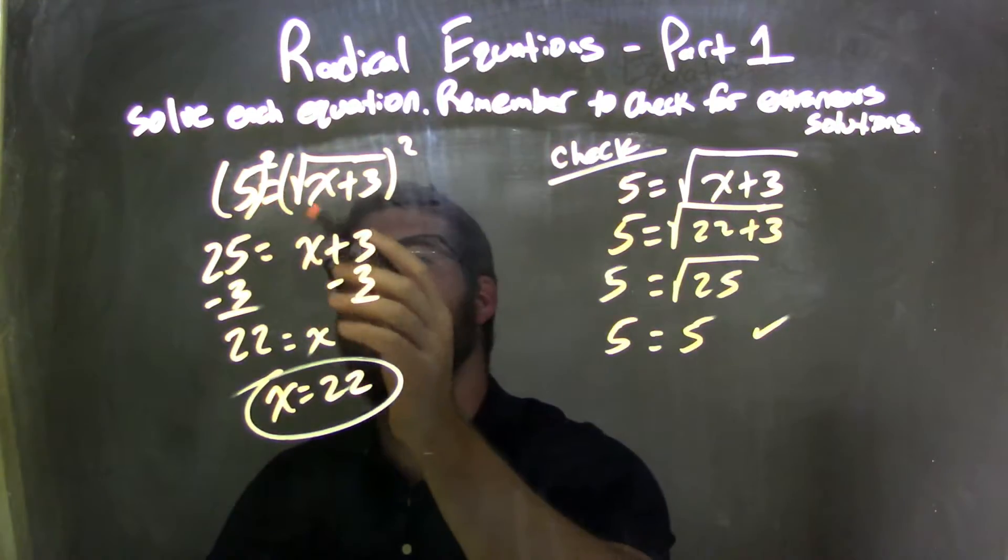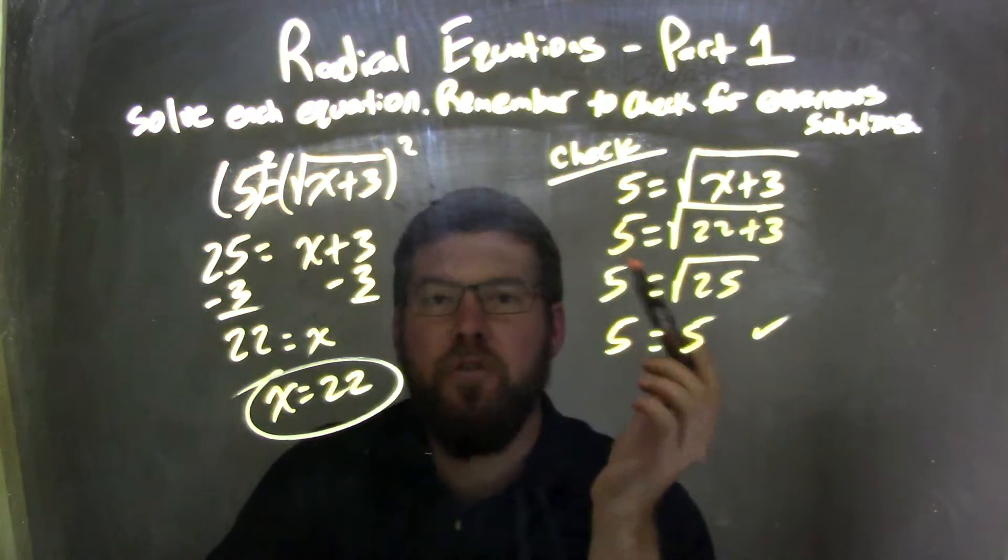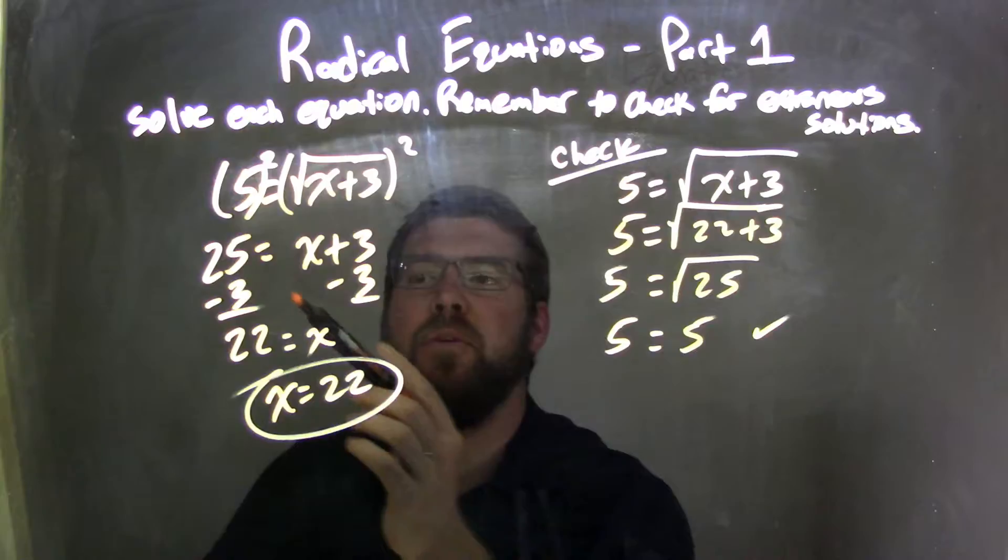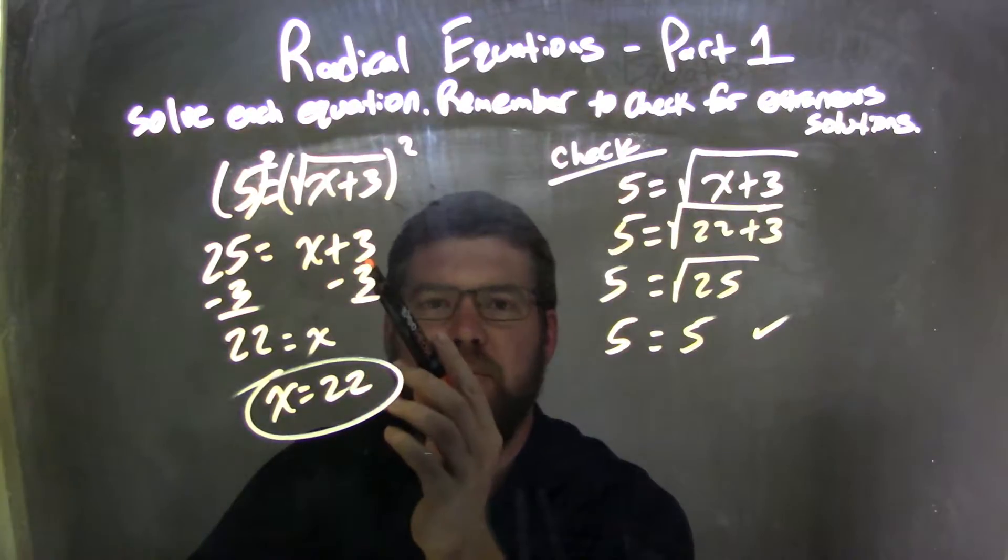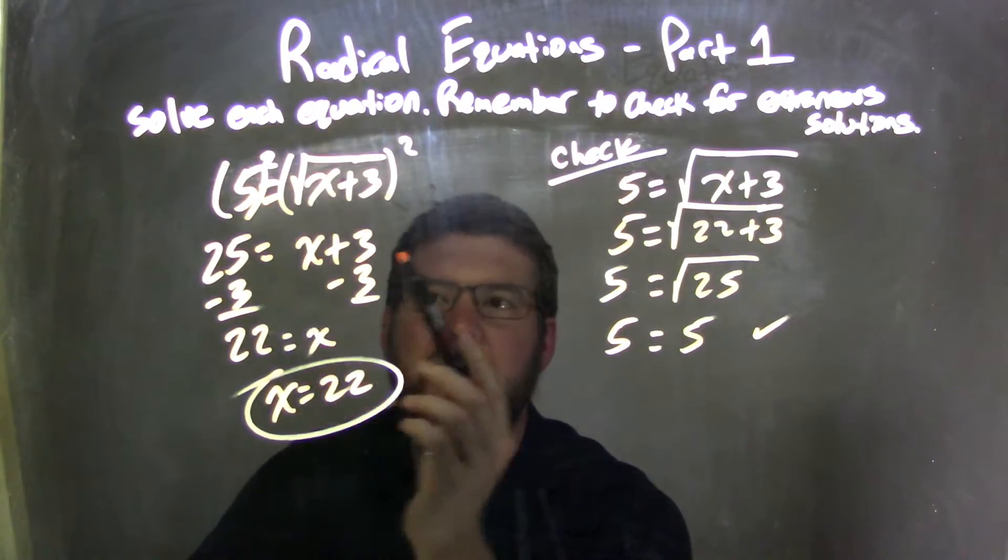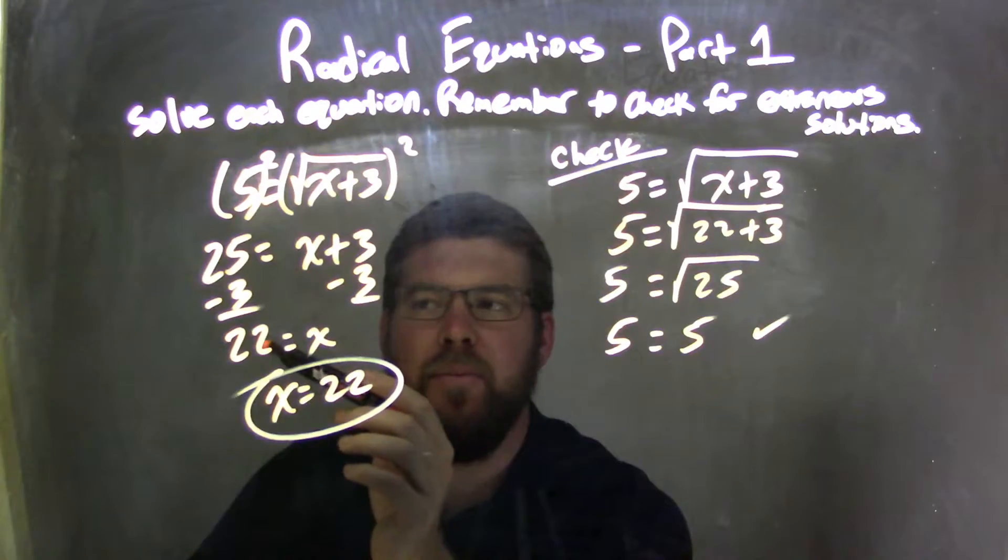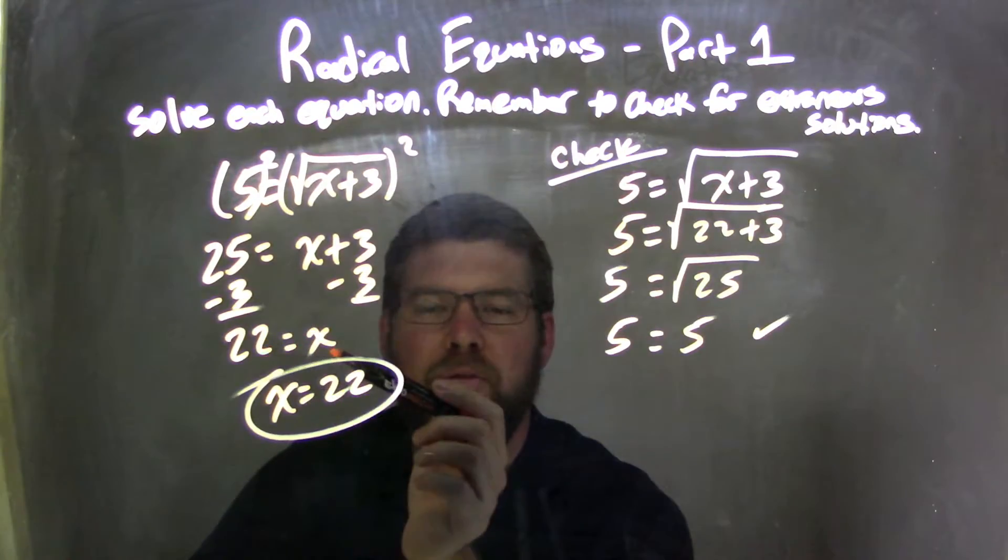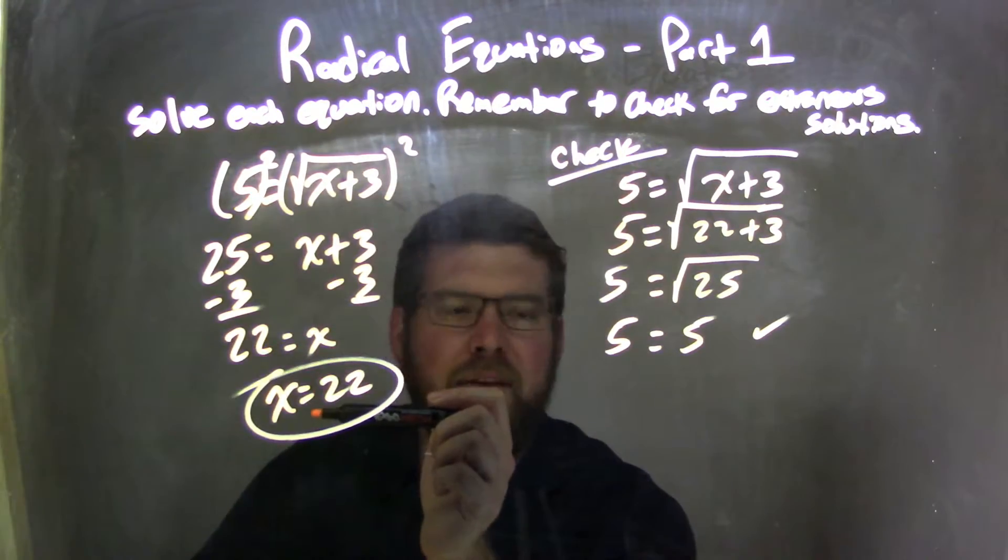So, let's recap. We started with 5 equals square root of x plus 3. I squared both sides to eliminate the square root, leaving me with 25 equals x plus 3 because 5 squared is 25. I then subtracted 3 from both sides, leaving me with 25 minus 3 is 22 equals x. Rewrote it to make it nice and neat, x equals 22.